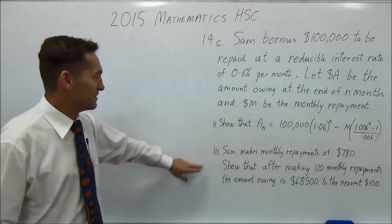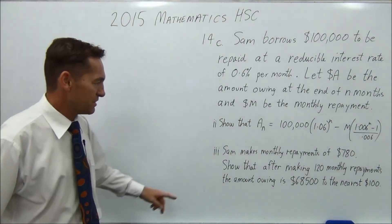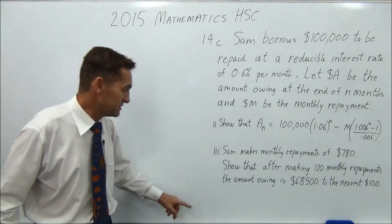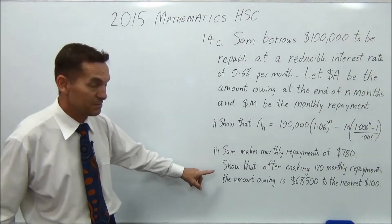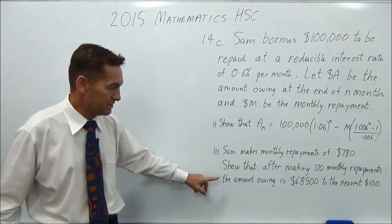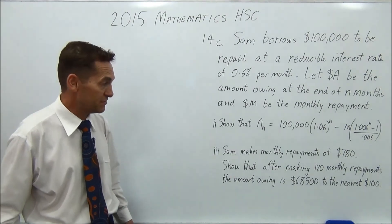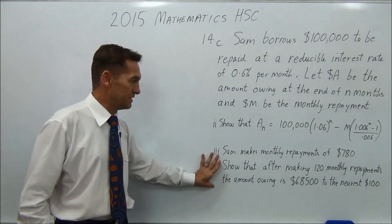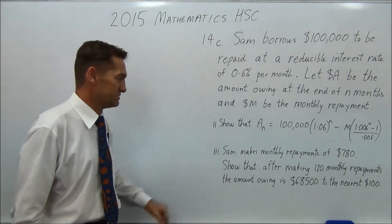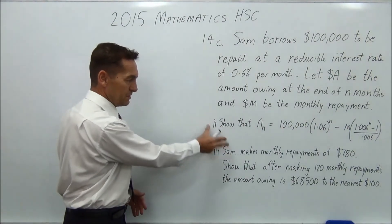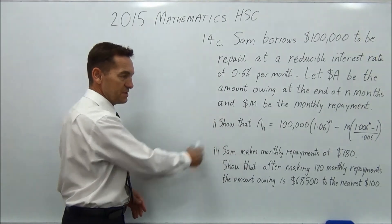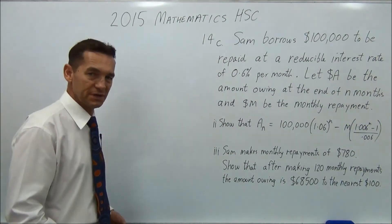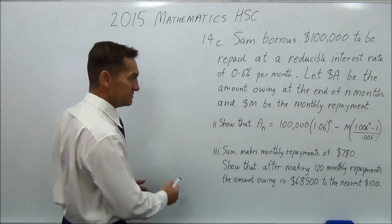G'day again. Back for part three. Sam makes monthly repayments of $780. Show that after making 120 monthly repayments, the amount owing is $68,500 to the nearest hundred dollars. Well this would be the easiest part of the question because it's just straight substitution. They've given you the formula and you just put these numbers into that equation, press the buttons on your calculator and you're done. So let's do that.